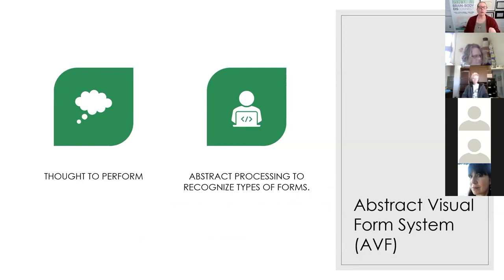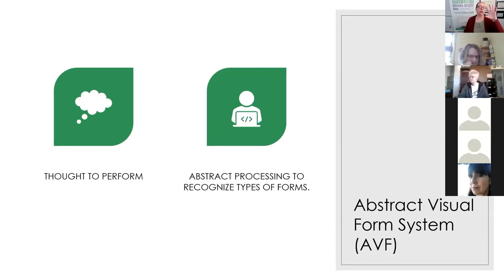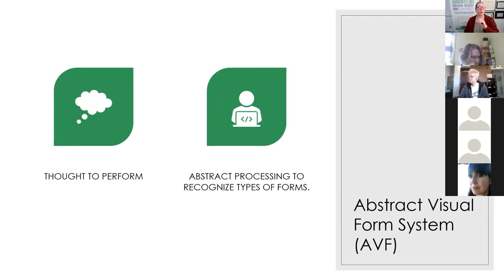This term came from an OT journal article I found - I had actually forgotten it as I was looking back through my research. The term is 'abstract visual form system' - where you're taking your thought, pre-forming it in your mind, and abstracting the process of recognizing the forms that you see in your environment. Abstract thought is a combination of three pieces: form constancy, visual closure, and visual figure-ground, all combined together.